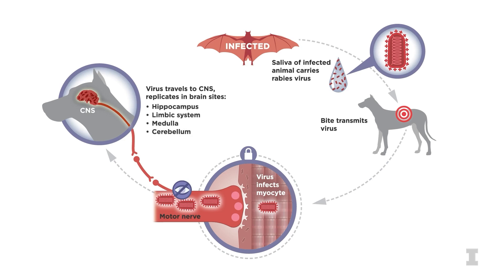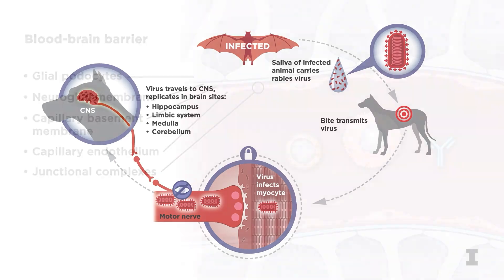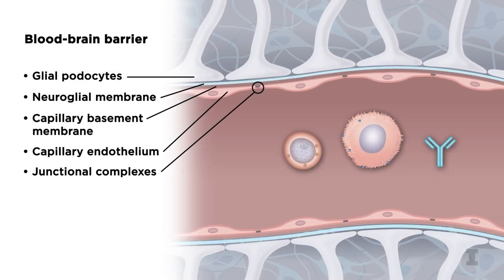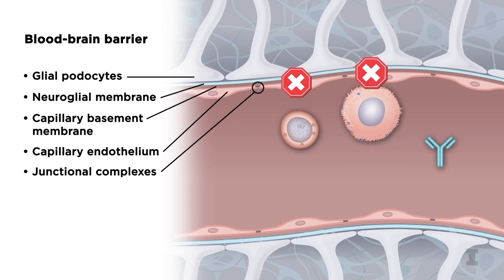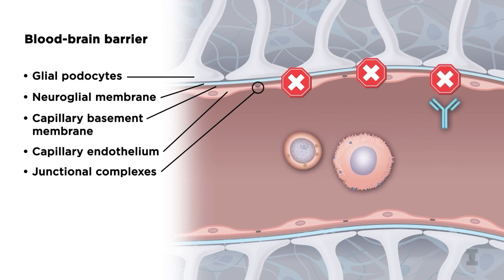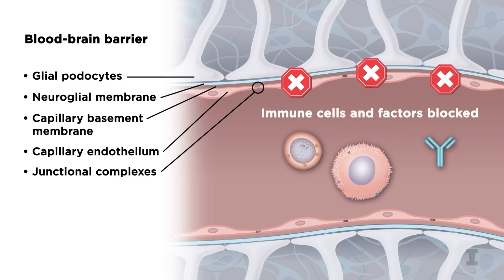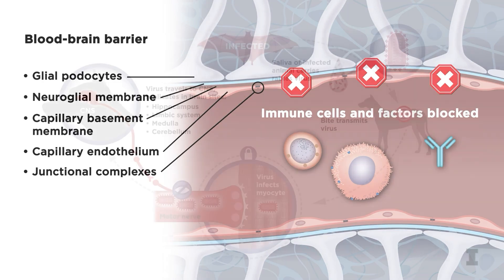The CNS is also an immune-privileged site because of the blood-brain barrier. This barrier tightly restricts the movement of chemical compounds and cells into the central nervous system, so immune responses here are also minimal.